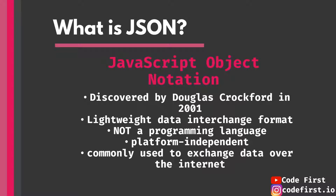JSON came along in 2001 as an alternative or competitor to XML. It's important to know that JSON is not a part of JavaScript despite holding the name inside it. JSON is not related to any programming language — it is not a programming language. You cannot code JSON to make applications or write programs. JSON is for storing and transmitting data. It's platform independent, meaning programs in pretty much any language can parse and read data from JSON files.